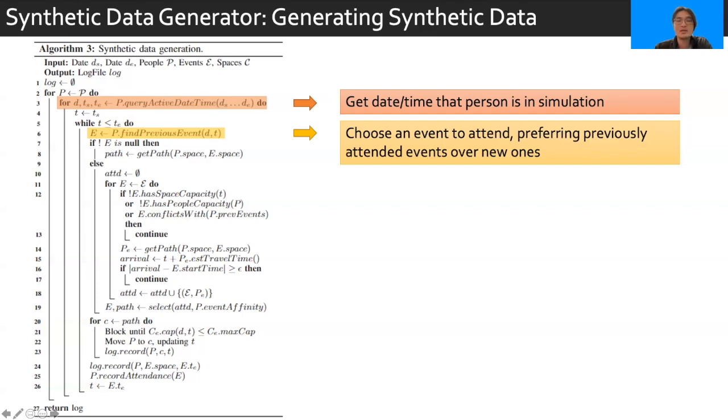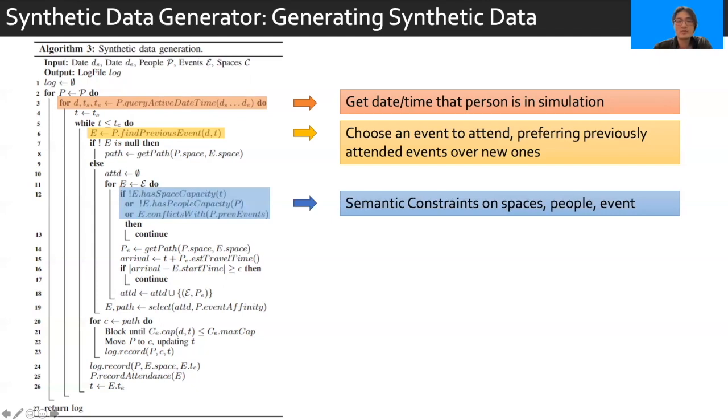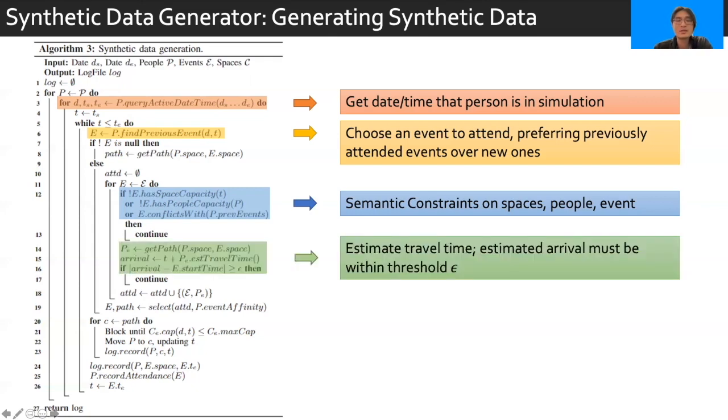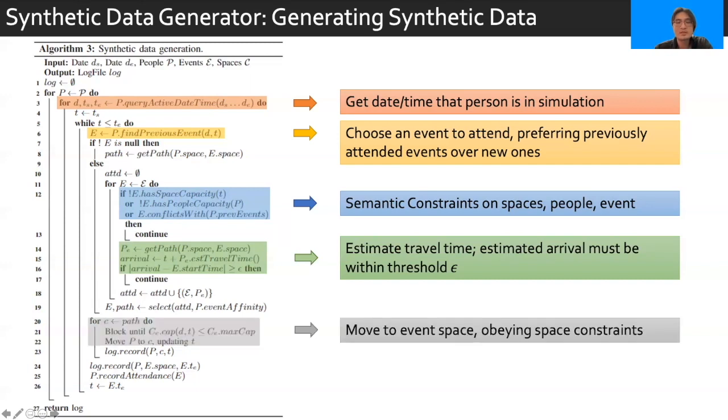When a person decides to select this new event, we have to make sure that all the semantic constraints for the person attending events are not violated. This includes things like the capacity of spaces that cannot be exceeded, and looking at the attendance of events that should be followed, for example, one professor and 20 students for a small discussion classroom. If an event is found, then we also need to make sure that the person is able to reasonably attend the event. We estimate their estimated travel time to that event, and make sure that it's within some threshold epsilon. Once an event is chosen, the person will move to the event space while obeying space constraints, namely capacity, and the results are going to be recorded as appropriate. This process is going to produce a synthetic dataset.